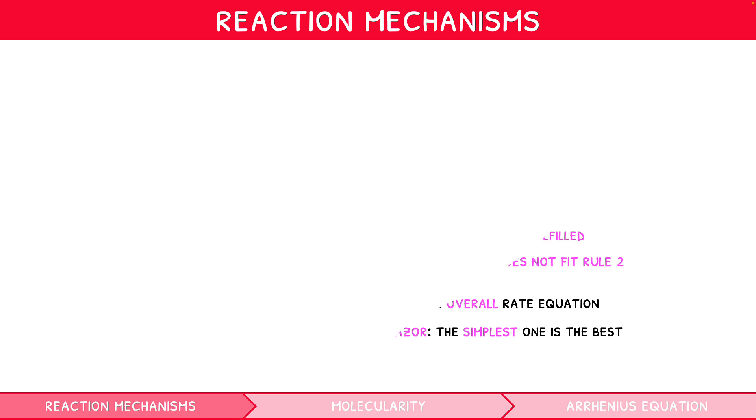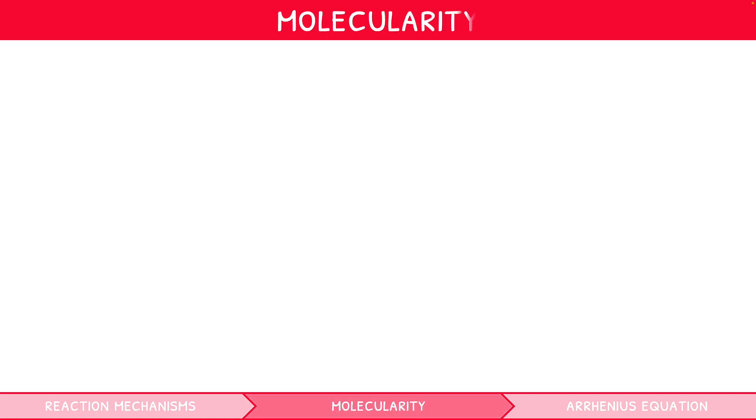A further concept tested in your rate topic is molecularity. This is defined as the number of molecules that take part in a reaction. For example, if CH4 reacted with 2O2 to give CO2 and 2H2O, the molecularity would be 3. It is commonly tested using the iodination of propanone.